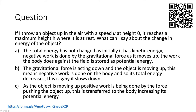Consider this question: if an object is thrown upward with speed u at height zero, it reaches maximum height h where it's at rest. The total energy has not changed — initially it has kinetic energy, negative work is done by gravity as it moves up, and the work done against the field is stored as potential energy. The gravitational force acts down and the object moves up, meaning negative work is done on the body, so only its kinetic energy decreases — not its total energy.